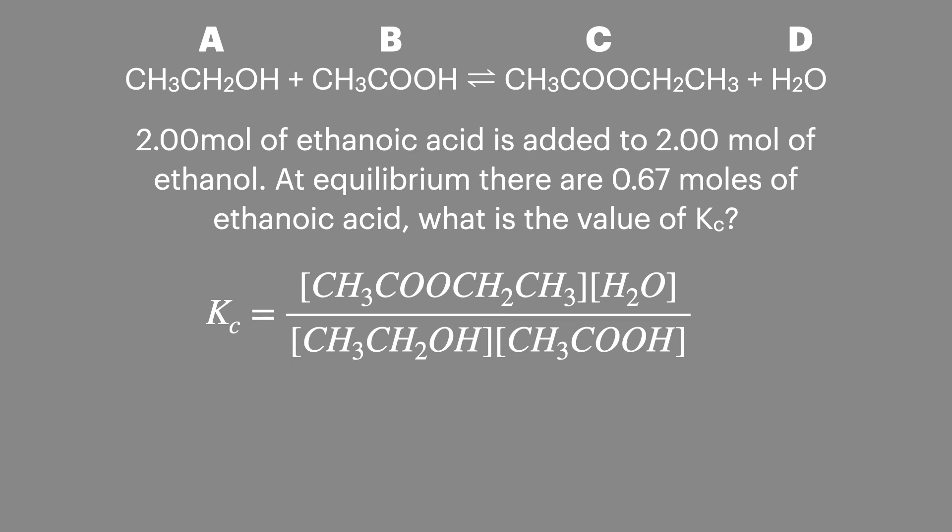So if we replace the concentrations of each of the reactants with the number of moles divided by the volumes you can see that the volume values on the top line cancel with those on the bottom line. This leaves you just with the number of moles of each species present at equilibrium. Now this only works when there's an equal number of items on the top and the bottom rows of the expression.